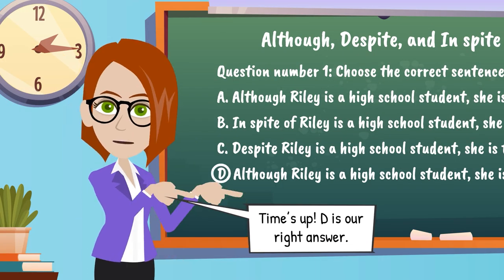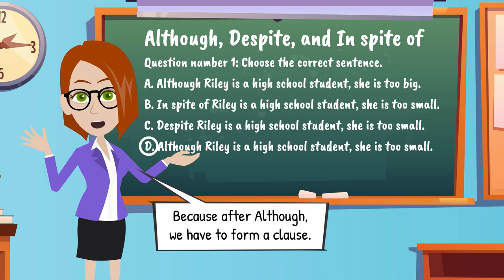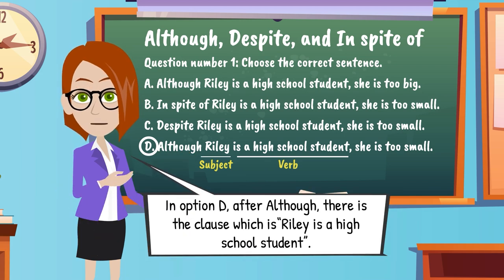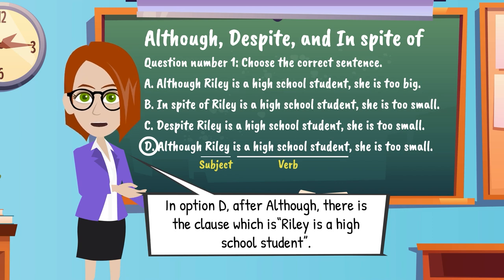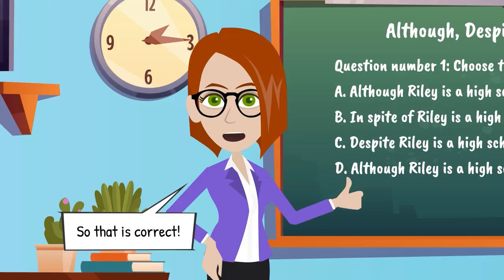Time's up! D is our right answer. Because after although, we have to form a clause. A clause has at least two parts, subject and verb. In option D, after although, there is the clause which is Riley is a high school student. So that is correct!